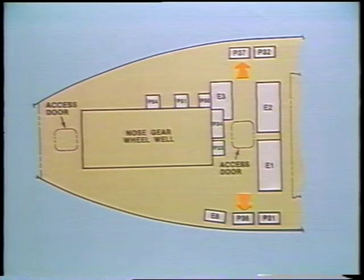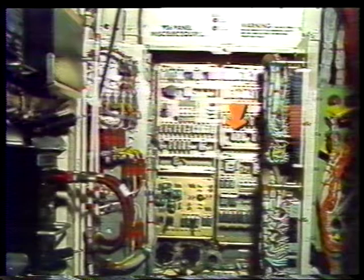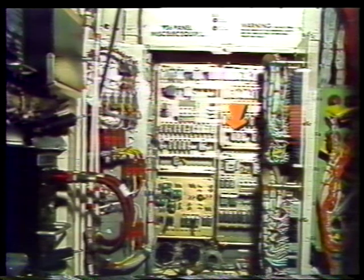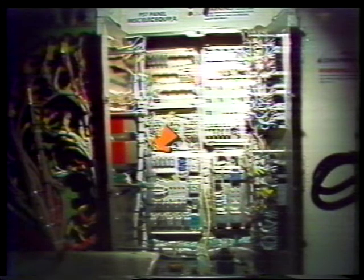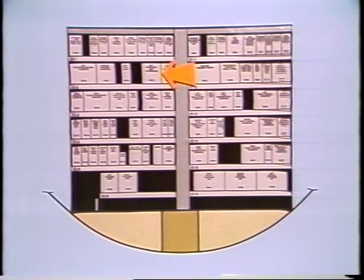The air ground relays for the left and right air traffic control systems are located in the main equipment center. The left air ground relay K143 is in the left miscellaneous electronic equipment panel P36, and the right air ground relay K200 is in the right miscellaneous electronic equipment panel P37. The air traffic control transponders are located on the E2 racks: the left transponder at E2-2 and the right transponder at E2-3.